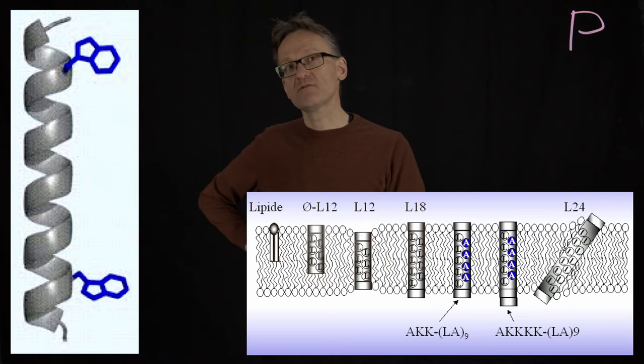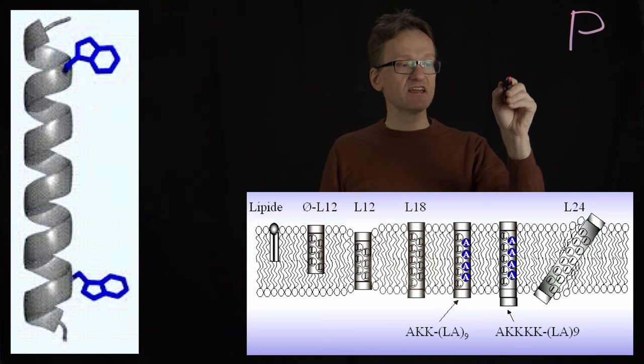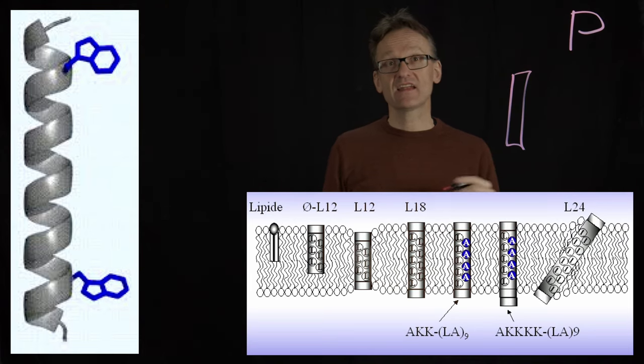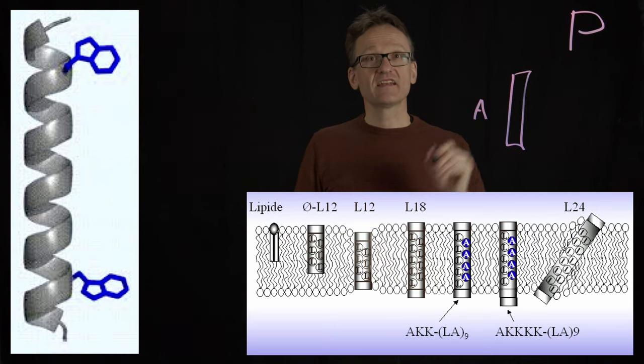So what if we now take that helix, but instead of drawing it the way we have it here, let's assume that I take a helix that's roughly 50 percent alanine and 50 percent leucine, but I put all the alanines on that side and all the leucines on that side.